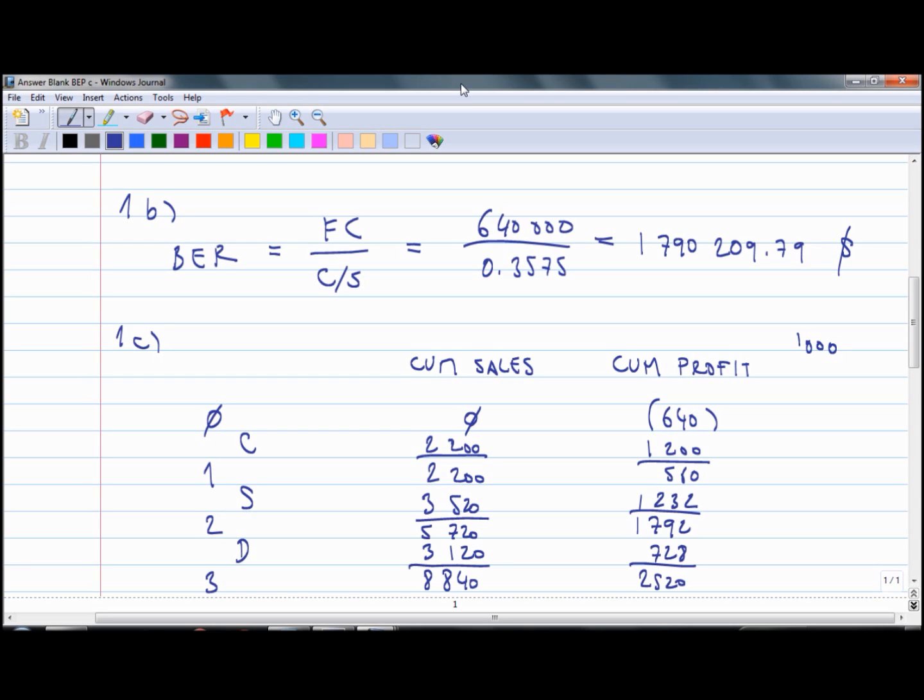As the last we would sell product D, which would give us point 3 in our line with cumulative sales of 8,840,000 and cumulative profit of 2,520,000. Now we could draw these points on our graph.